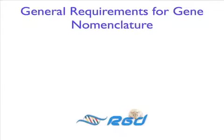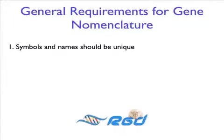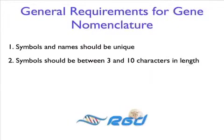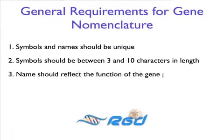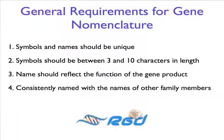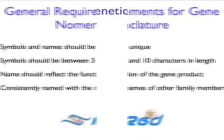General requirements for gene nomenclature are as follows. As much as possible, gene symbols and names should be unique within the nomenclature of a single species. Gene symbols should be between three and ten characters in length, representing a short form of the gene name. Ideally, the name reflects the function of the gene product. If the gene belongs to a family of genes, the name should be consistent with the names of the other family members.